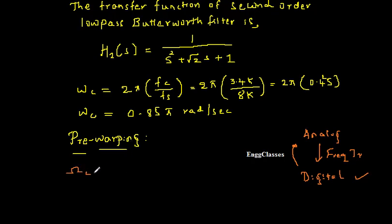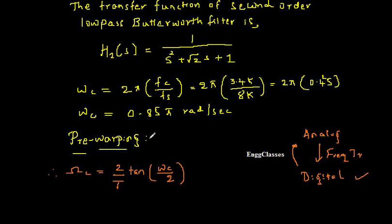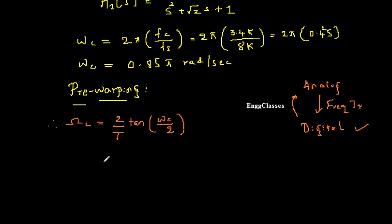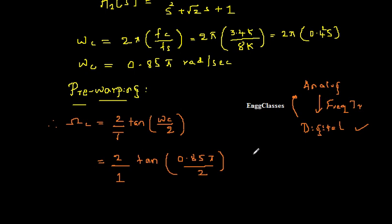The pre-warping formula gives the analog cut-off frequency Omega C as 2/T times tan(Omega C / 2). There is a separate video explaining this in detail. For simplicity, we take T equal to 1, so it becomes 2 times tan(0.85pi / 2). Solving that, we get Omega C equal to 8.33. So now we have the frequency specification in the analog domain.